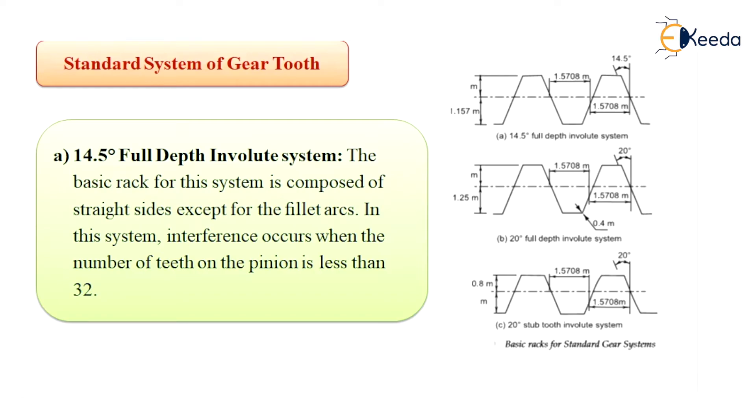The first system is 14.5 degree full depth involute system. The basic rack for this system is composed of straight sides except for the fillet arcs. In this system, interference occurs when the number of teeth on the pinion is less than 32. This system is satisfactory when number of teeth on the gear is large.